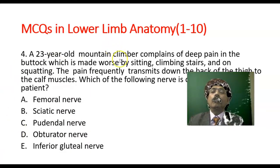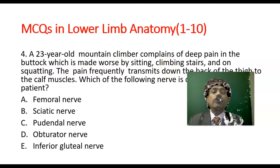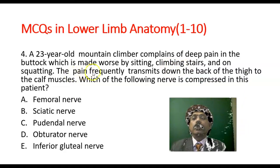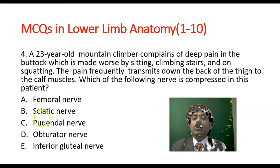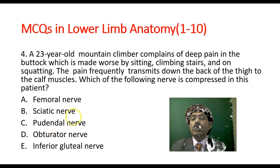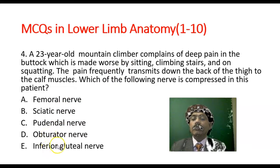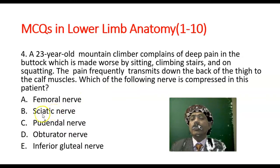Question number 4: A 23-year-old mountain climber complains of deep pain in the buttock which is made worse by sitting, climbing stairs, and squatting. The pain frequently transmits down the back of the thigh to the calf muscle. Which of the following nerves is compressed in this patient? The femoral nerve is located anteriorly; the pudendal nerve goes to the genitalia; the obturator nerve supplies the medial compartment adductor muscles; the inferior gluteal nerve supplies gluteus maximus. The answer should be the sciatic nerve.